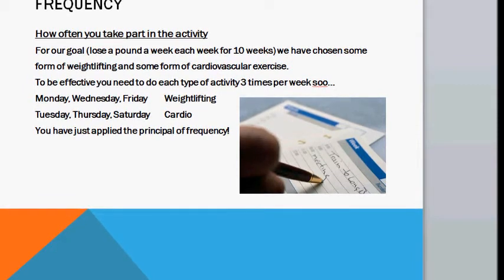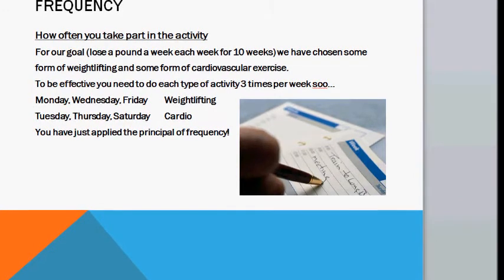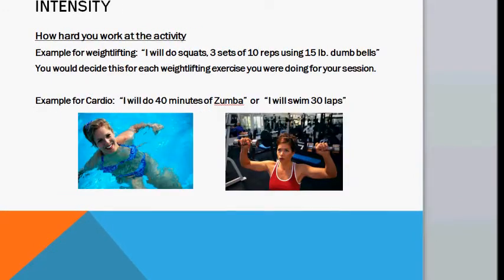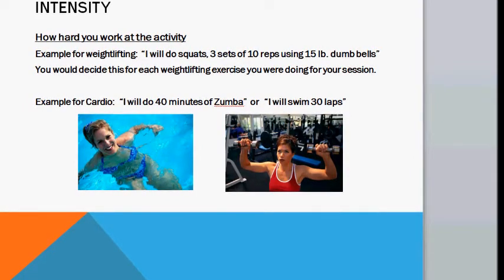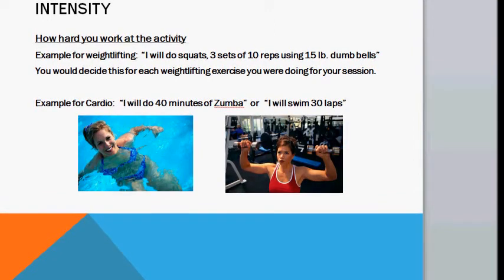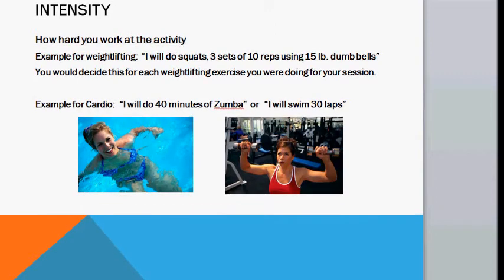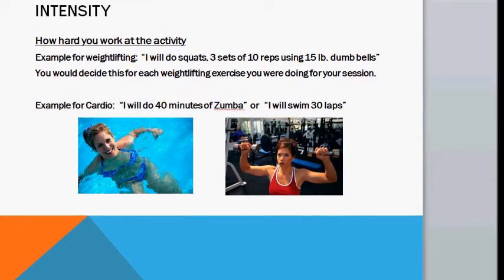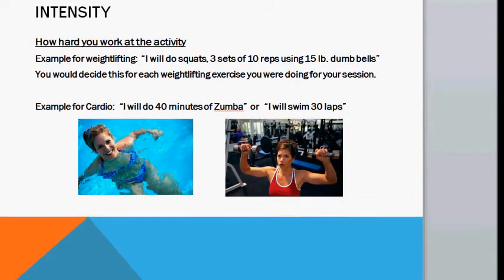Next is Intensity, and that's how hard you work at the activity, or at what point you start. For example, for weightlifting, for each exercise, you would have to decide where you started. So you might say, I will do squats — I'll do three sets of 10 reps using 50 lb dumbbells. You would have to decide this for each weight of the exercise you were doing.